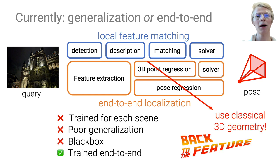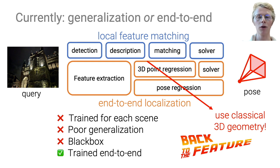In this paper, we argue that deep networks do not need to learn 3D geometry. Instead, deep nets should go back to the features. They only need to learn good features, and the regression should be performed with classical geometry.